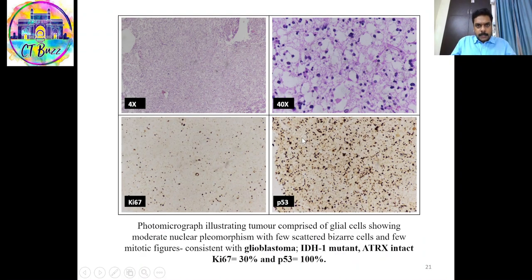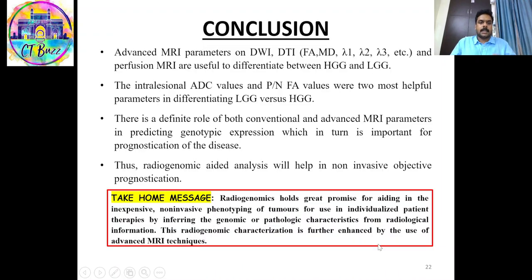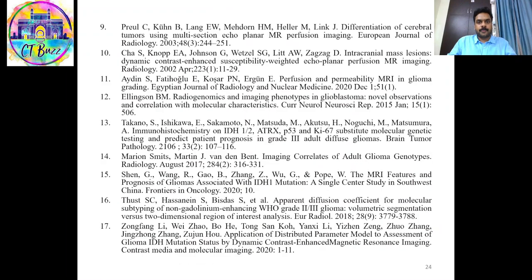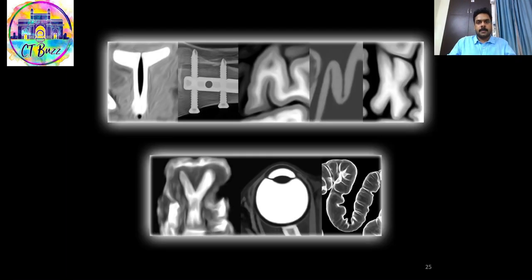The corresponding histopathological and IHC panel of a glioblastoma that is IDH1 mutant and ATRX intact is shown. The take-home message is that radiogenomics holds great promise for aiding in inexpensive, non-invasive phenotyping of gliomas, and radiologists should go beyond diagnosis into prognosis to predict which glioma has a poor prognosis and which has a better prognosis.